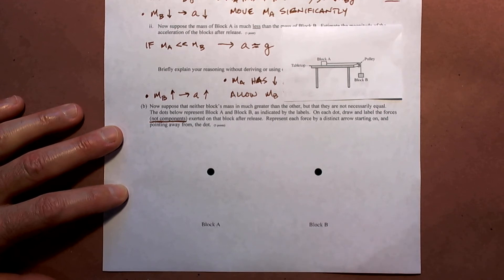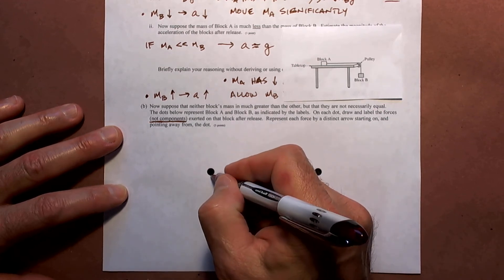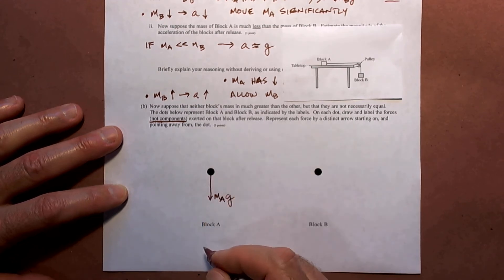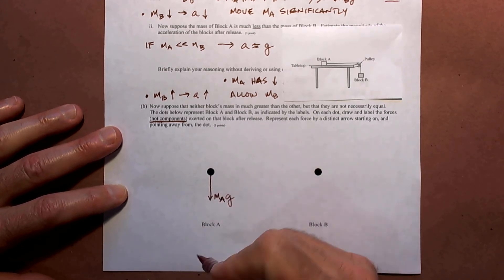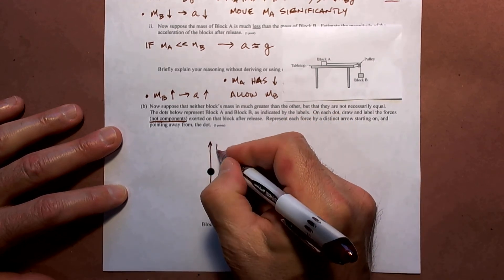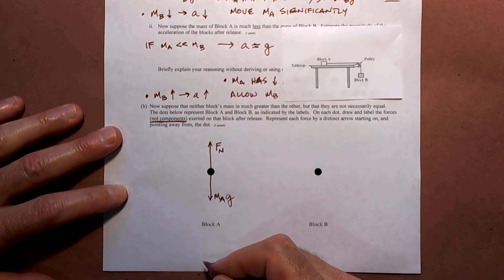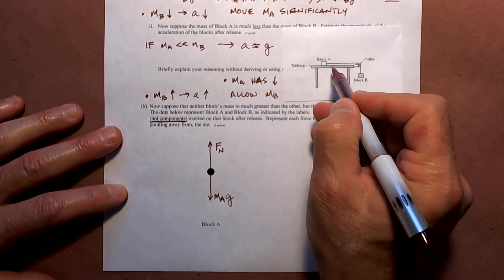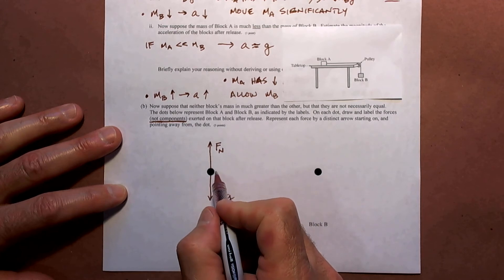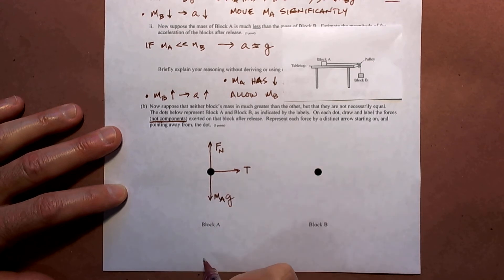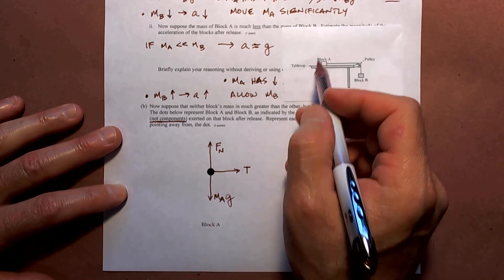What are the forces on block A? It's sitting on the table, so it has a weight force downward: mA times G — you can call it the force due to gravity or the force of the Earth on block A. It's not falling toward the center of the Earth, so there's an opposing normal force upward from the table — the force of the table on block A. There's also a string attached to block A, and it applies a tension force to the right. That's the free body diagram for block A — nothing else is touching it.